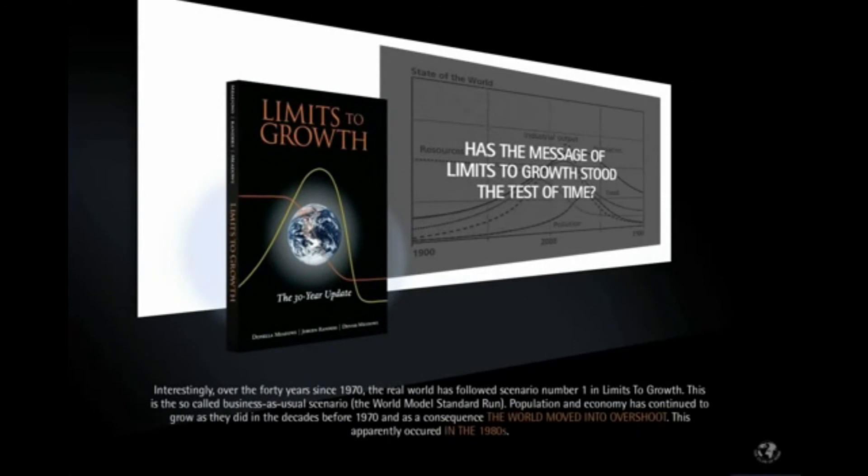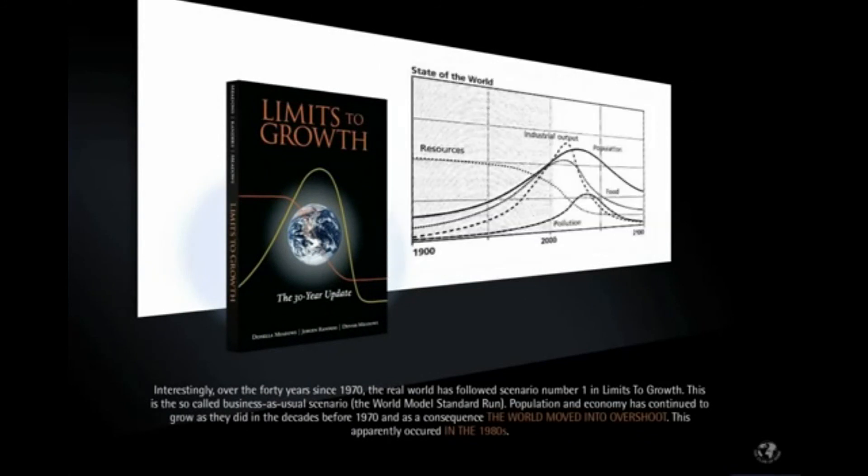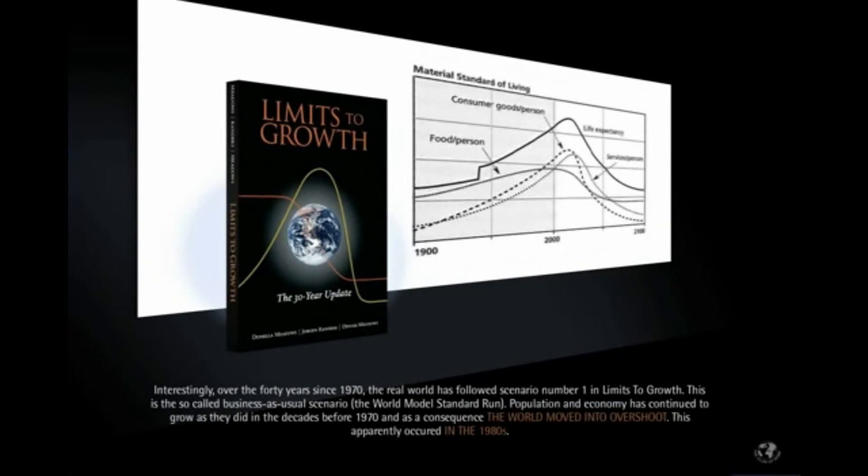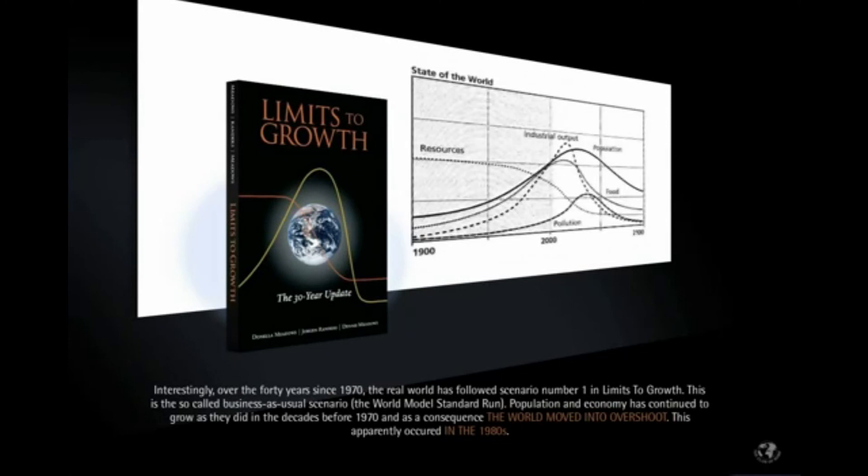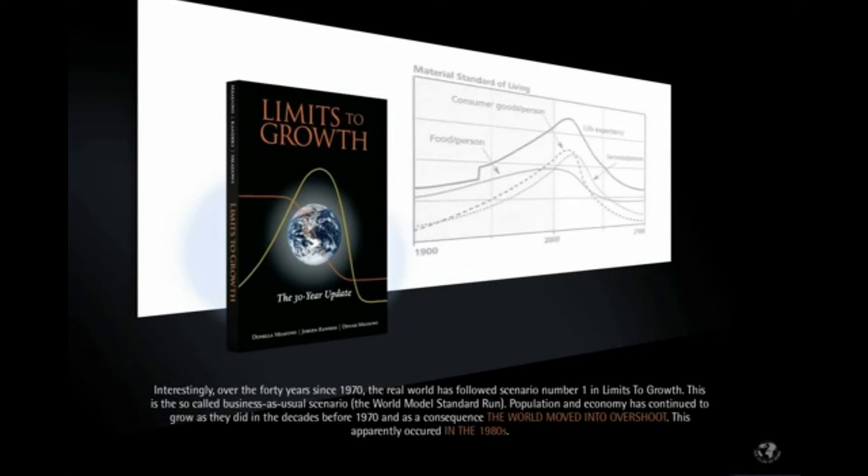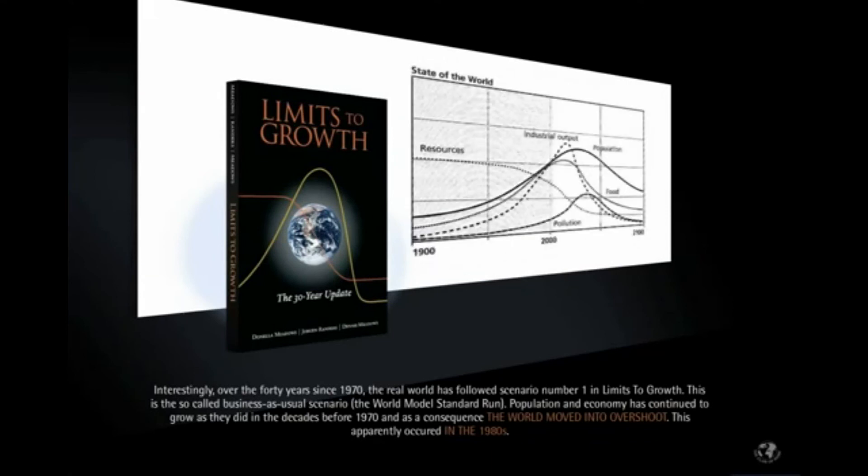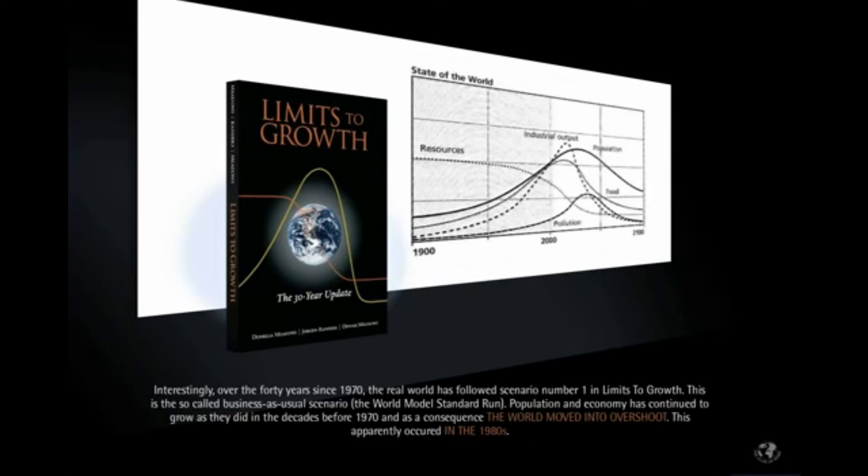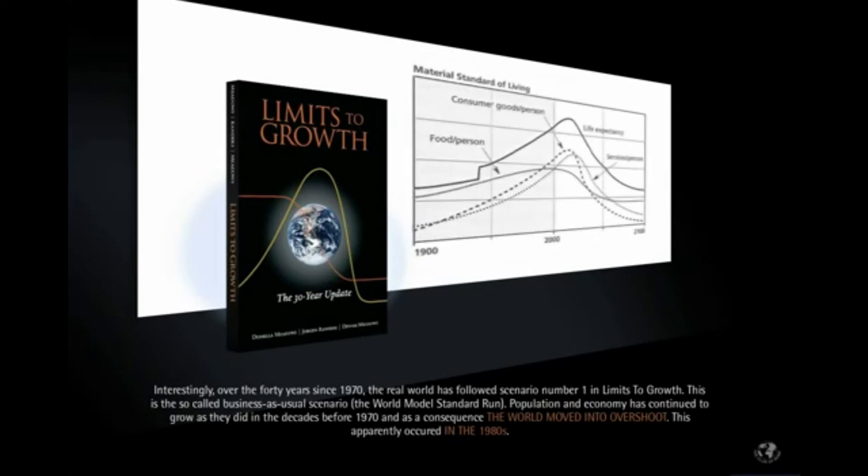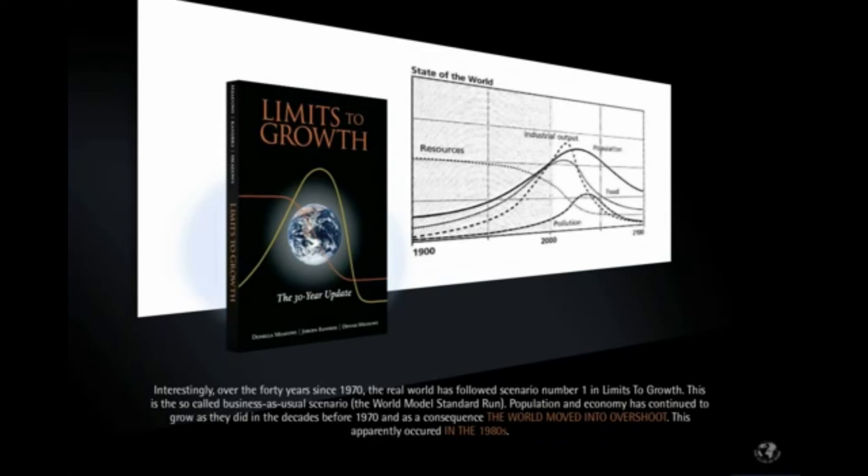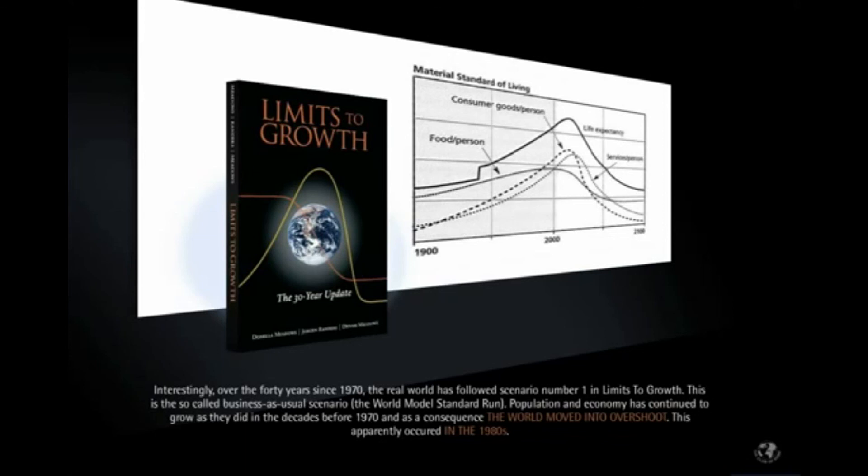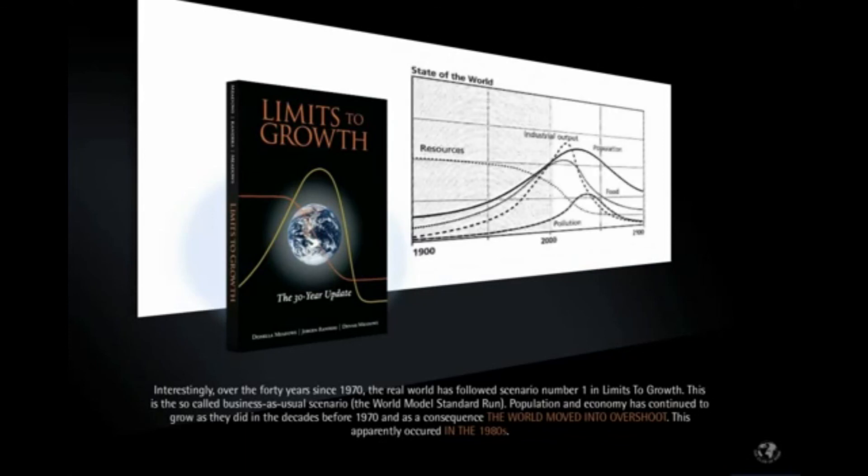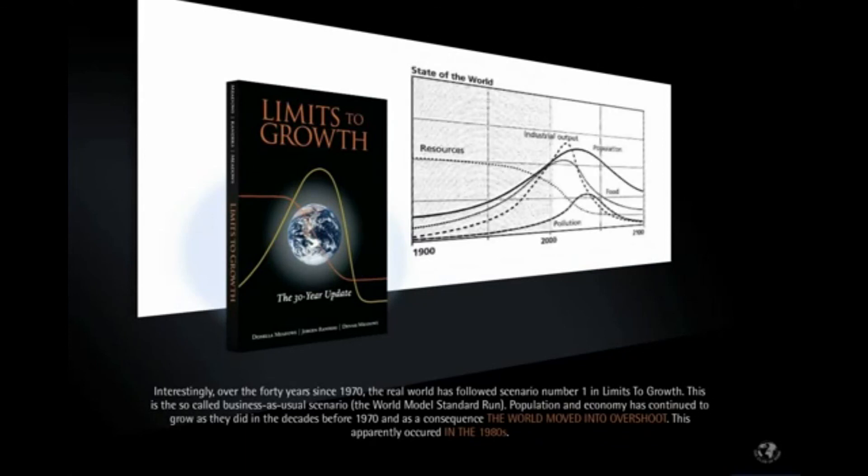Chapter 6: Has the message of Limits to Growth stood the test of time? Interestingly, over the forty years since 1970, the real world has followed scenario number one in Limits to Growth. This is the so-called business as usual scenario, the world model standard run. Population and economy has continued to grow as they did in the decades before 1970, and as a consequence the world moved into overshoot. This apparently occurred in the 1980s.